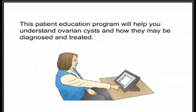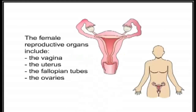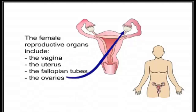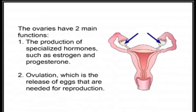The female reproductive organs include the vagina, the uterus, the fallopian tubes, and the ovaries. These organs are located in the pelvis between the urinary bladder and the rectum. The ovaries have two main functions: one, the production of specialized hormones such as estrogen and progesterone; and two, ovulation, which is the release of eggs that are needed for reproduction.